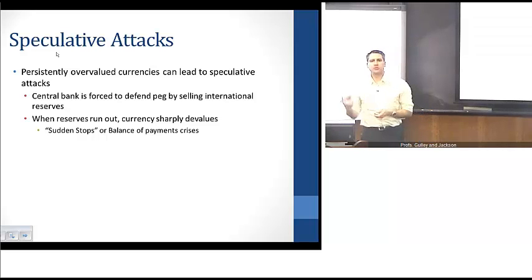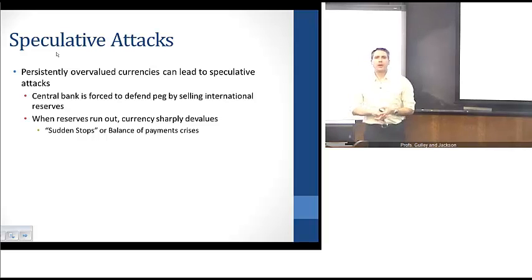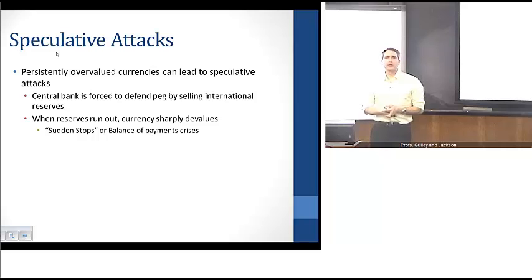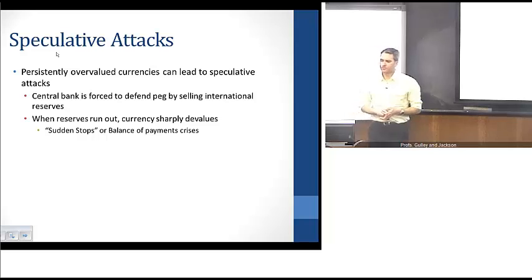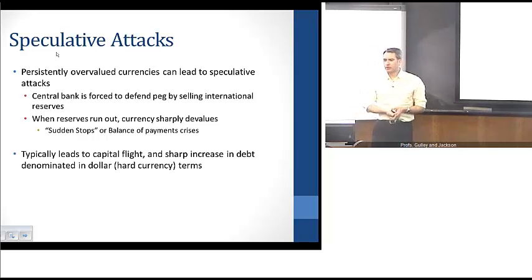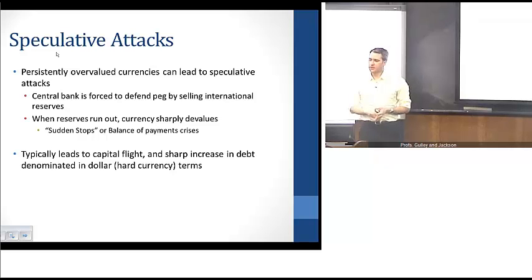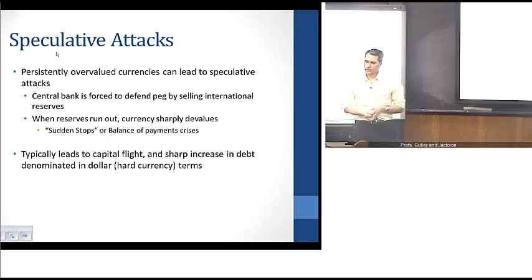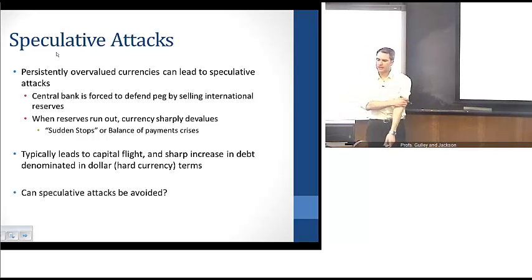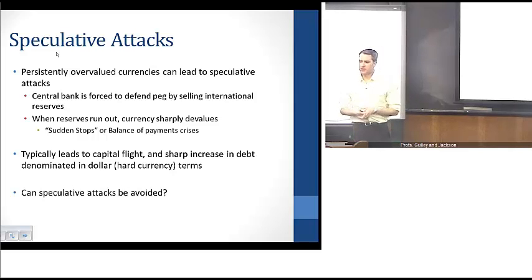That can lead to what's referred to as sudden stops or balance of payments crises, where the central bank doesn't have the ability to provide international reserves to other central banks to make capital flows occur. That can be problematic for a variety of reasons — it can lead to capital flight when you have these sharp devaluations, and it can lead to a sharp increase in debt denominated in dollar or hard currency terms through this currency mismatch.